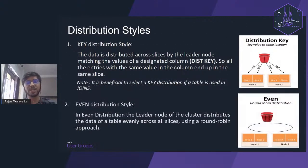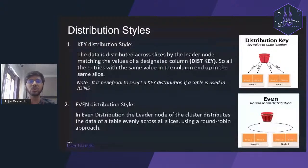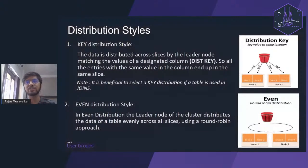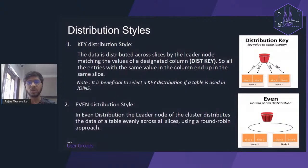The next distribution style is EVEN distribution. It's a simple style where records are stored in each partition in a round-robin fashion — the first record goes to the first slice, the second to the second slice, and so on. When it reaches the last slice, it cycles back to the first. There are no conditions checked behind the scenes. Even distribution style is generally used for tables that are NOT going to be joined with any other tables.